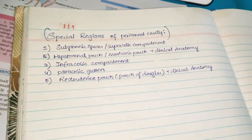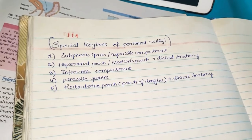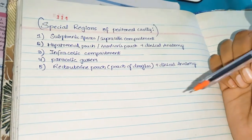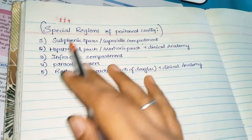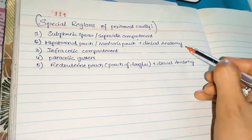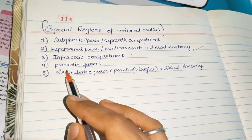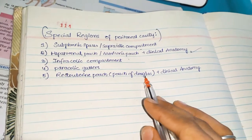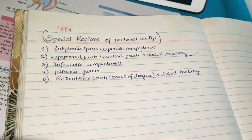In this video, we are going to discuss about the special regions of the peritoneal cavity. We are going to discuss five topics: subphrenic spaces, also called the supracolic compartment; hepatorenal pouch or Morrison's pouch along with its clinical anatomy; the infracolic compartment; paracolic gutters; and the recto-uterine pouch, also called the pouch of Douglas.